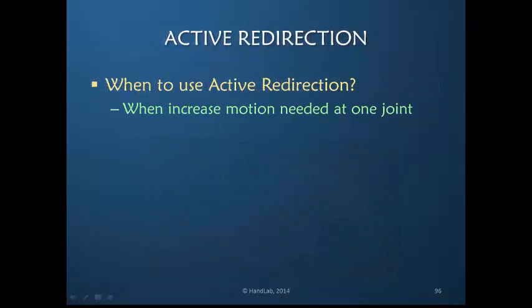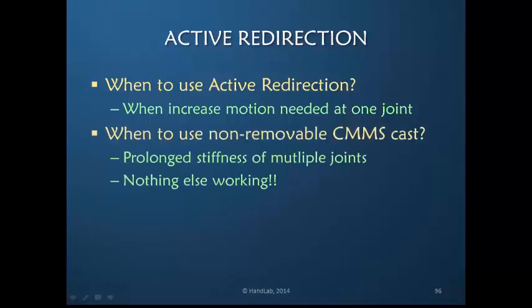When should you use active redirection? When increased motion is needed at one joint, it is the ideal choice - you simply construct a device that directs motion to that one joint. When would you use the non-removable SIMS cast? It would absolutely be my first choice when there's prolonged stiffness of multiple joints, and it often is a solution when nothing else is working.